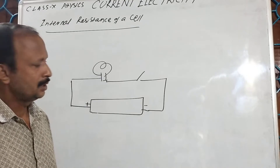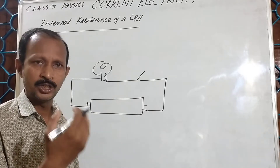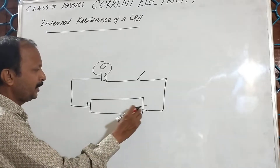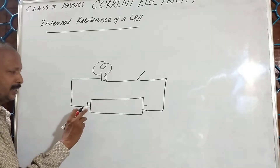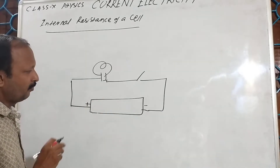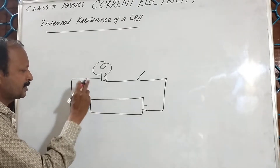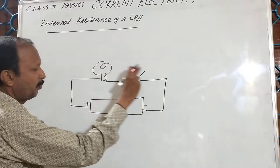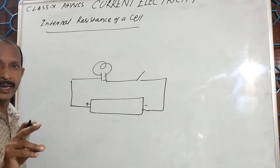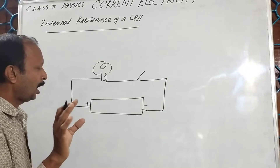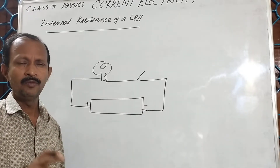The current inside this cell is due to the flow of ions, whether positive ions or negative ions. The current in the circuit is due to the flow of electrons. Inside this cell, current flows from negative to positive. Outside this cell, current flows from positive to negative. Inside, current is due to flow of ions — both cations as well as anions. Outside, in the circuit, current flows due to flow of electrons.